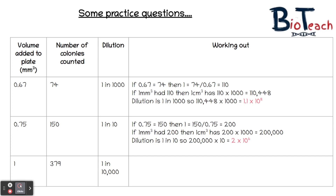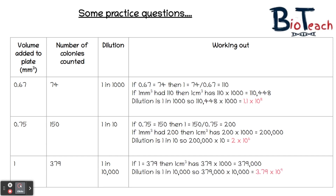Finally, you had 1 mm³ added to the plate, 379 colonies counted, and the dilution used was 1 in 10,000. So 1 mm³ = 379 colonies; 1 cm³ = 379 × 1,000 = 379,000; multiplied by the dilution factor of 10,000 gives 3.79 × 10⁹ bacteria per cm³ in the original undiluted sample.